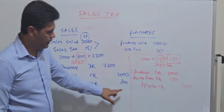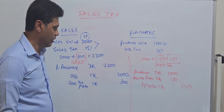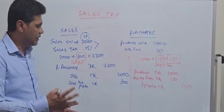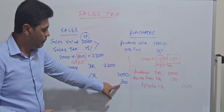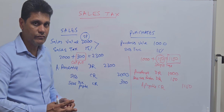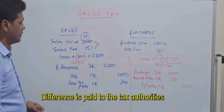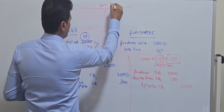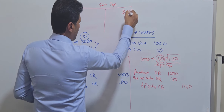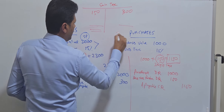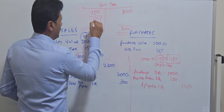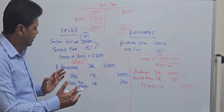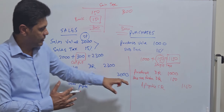Looking at the sales tax control account, the company submits returns usually every month. The company will set off the sales tax payable amount of 300 against the receivable amount of 150, and the difference of 150 will be paid to the tax authorities. This is the overview of how to record sales tax at the time of selling and at the time of purchasing.